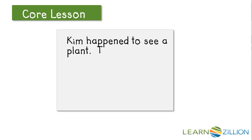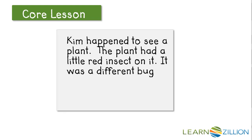Here we have a little passage. Once again we're going to try to find the vowels, see if they're followed by consonants, and then pronounce it with a short sound. The first word is going to be Kim. Then 'happened' — ha-ppened — to see a plant. Kim happened to see a plant.